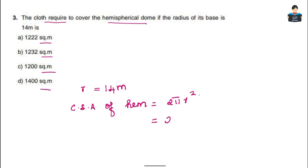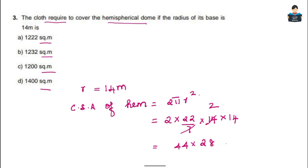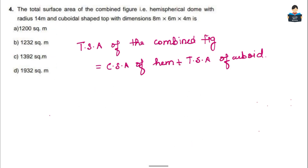So CSA = 2 × 22/7 × 14 × 14. Cancelling 7 once and 7 twice: 44 × 28 = 1232 square meters. So Option B is the answer.